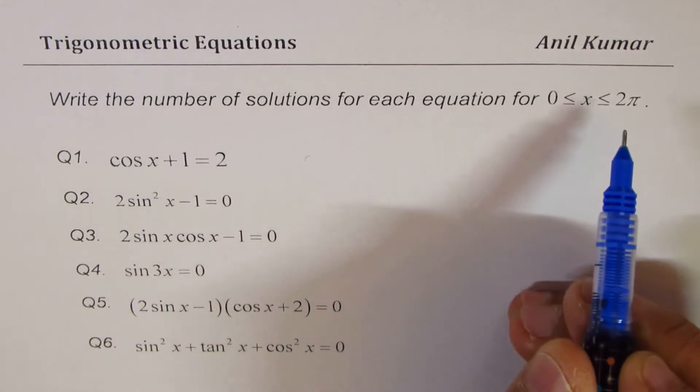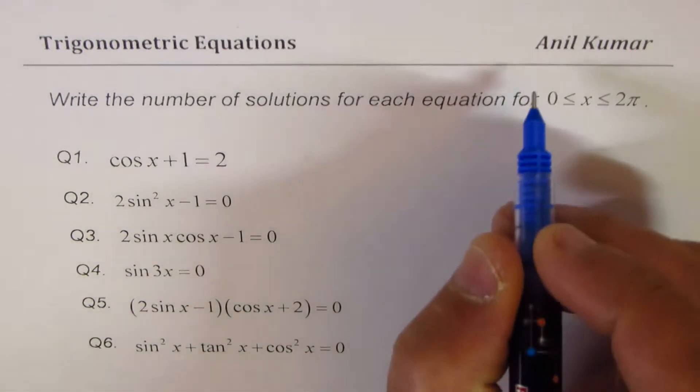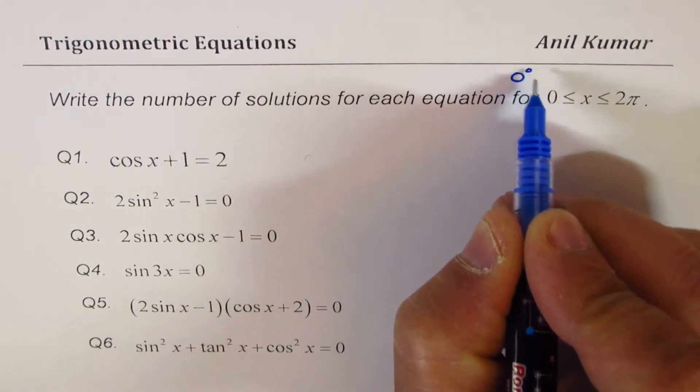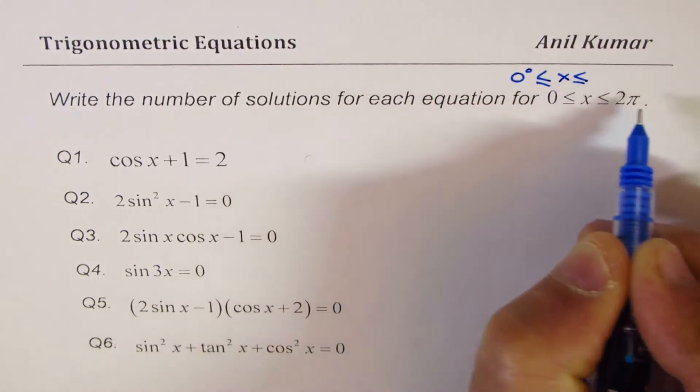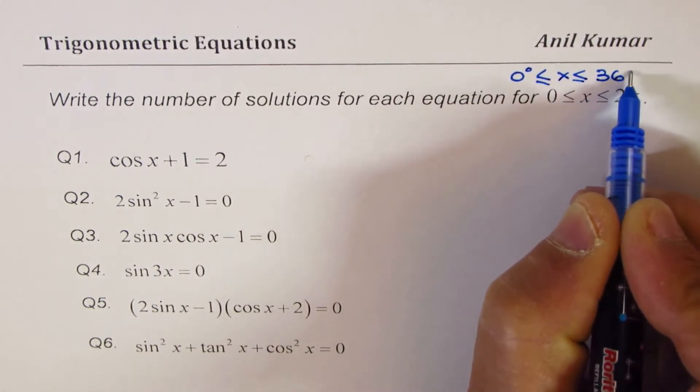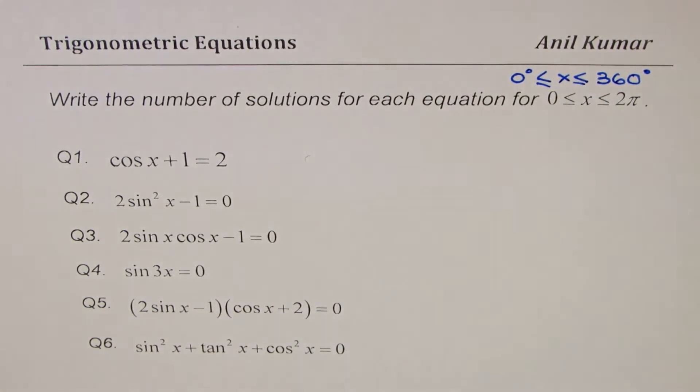In this particular video, we will learn how to write the number of solutions for each equation for x between 0 to 2π. Some of you who have not done radian measurements could take this as from 0 degrees to 360 degrees. 2π is 360 degrees. We have six questions here.